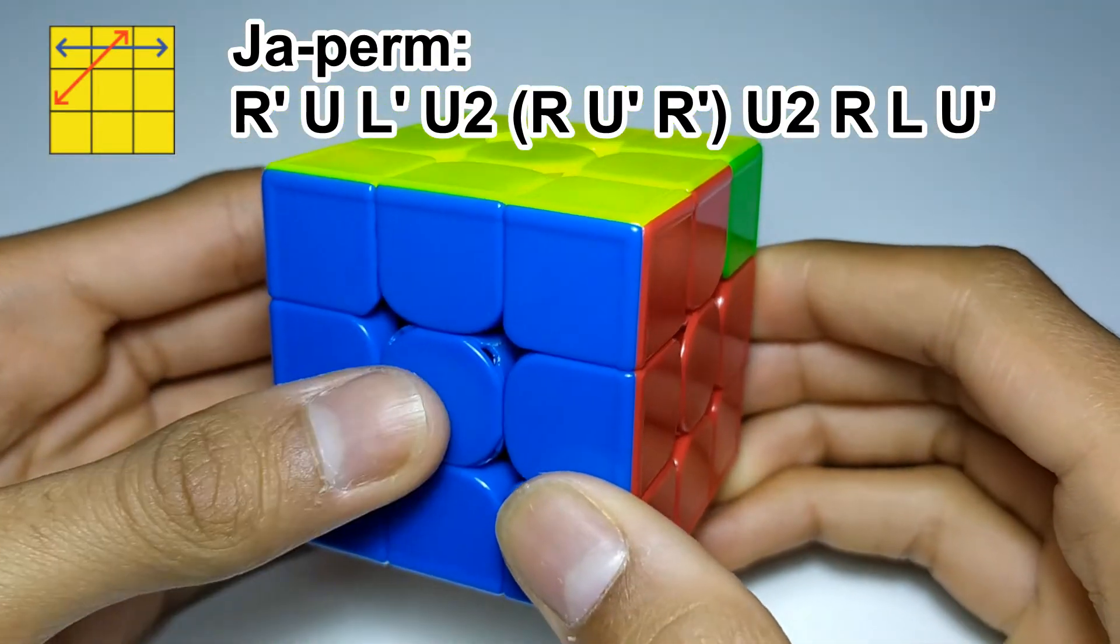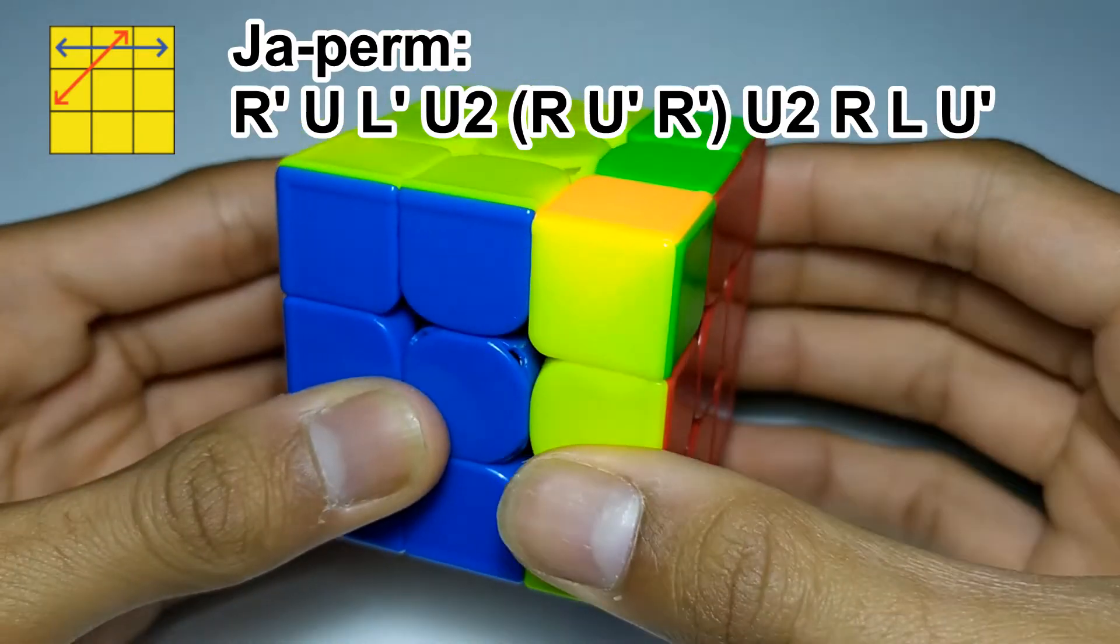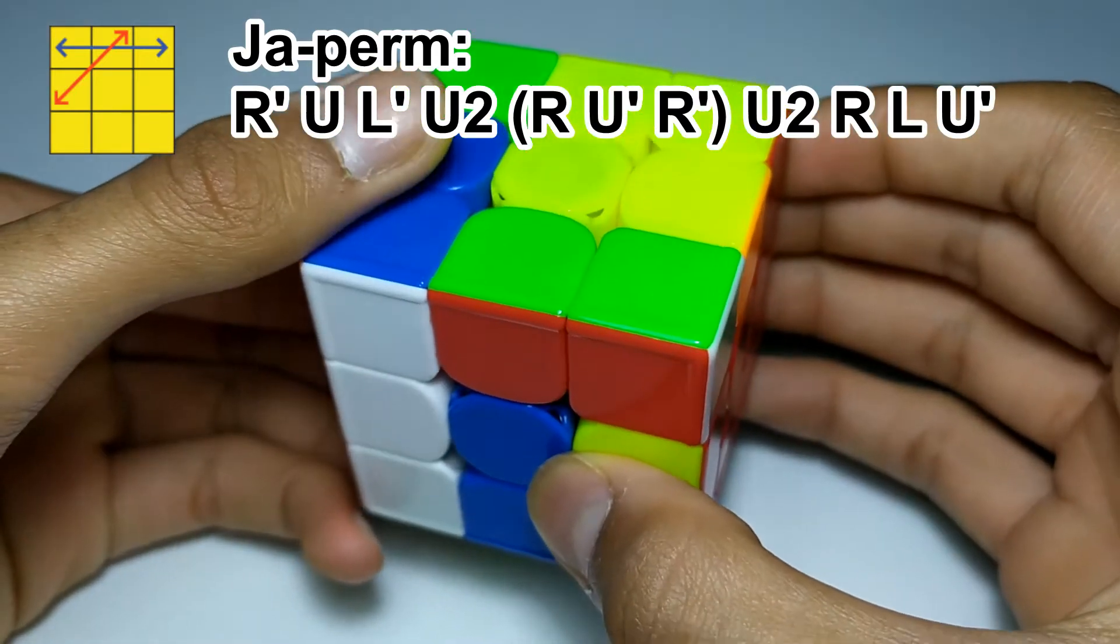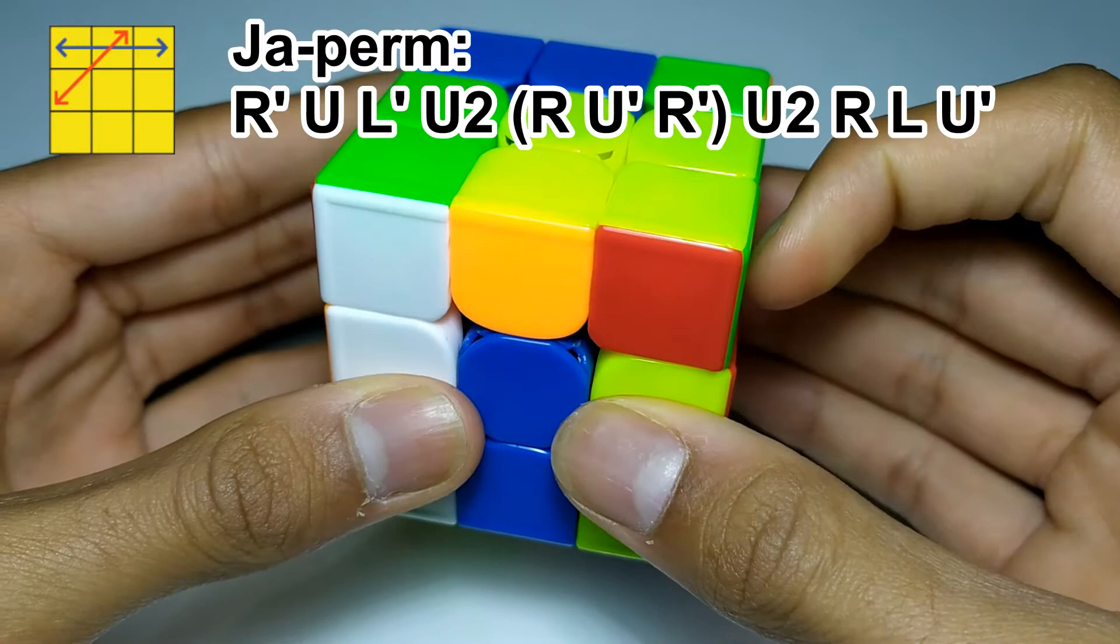So, the way I finger-trick this algorithm is I start with a re-grip, then R' U, and then after the L', I then re-grip my left hand back to the home position while doing the U2.